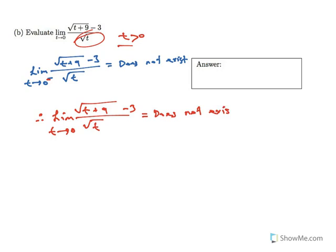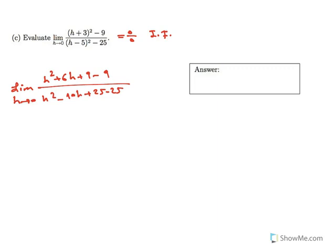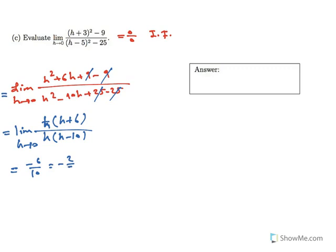Part C: find this limit. It's a simple fraction; if you plug in 0 you get 0 over 0, which is indeterminate form. You expand the numerator and the denominator. After expanding, the 9s and 25s cancel. Factoring h from top and bottom gives h times (h plus 6) over h times (h minus 10). As h approaches 0, this limit is negative 6 over 10, which is negative 2 over 5.